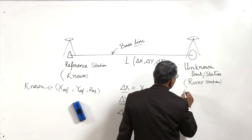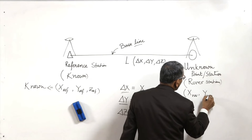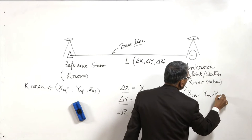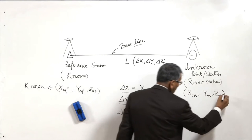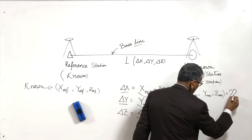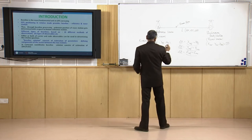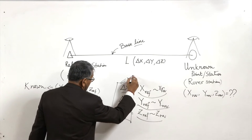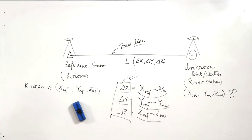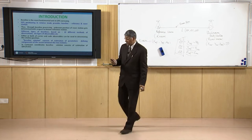We take X rover, Y rover, Z rover as the location of the rover station, which we do not know and have to find out. Through baseline processing we determine these values. This is considered in the Cartesian coordinate system. The baseline components can be determined by using code pseudo range observable, carrier phase observable, single or multi code observable, or code observable followed by phase observable.